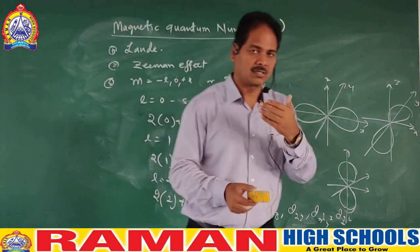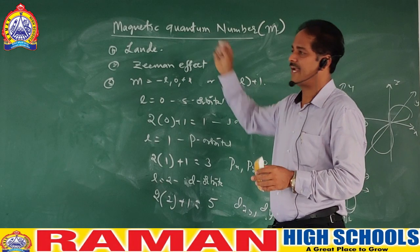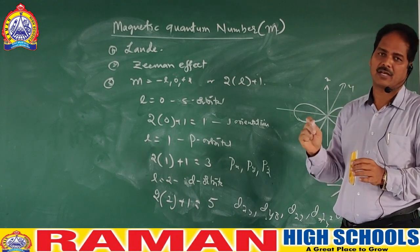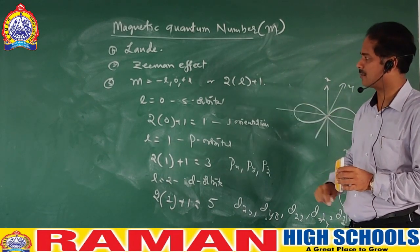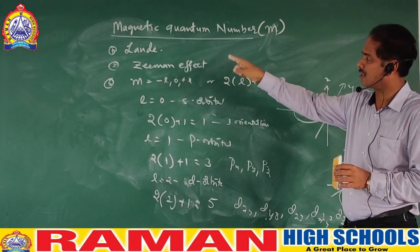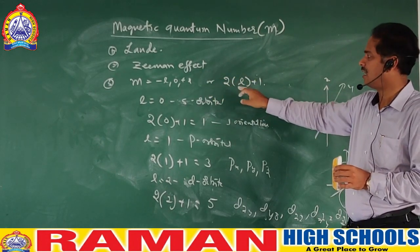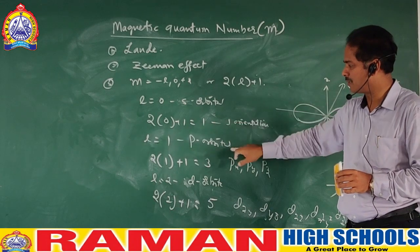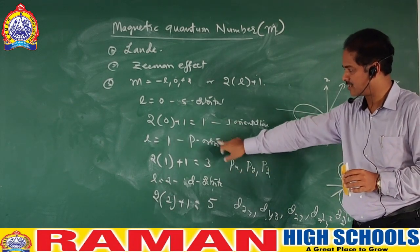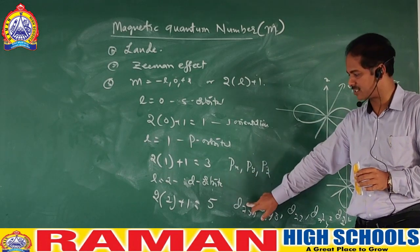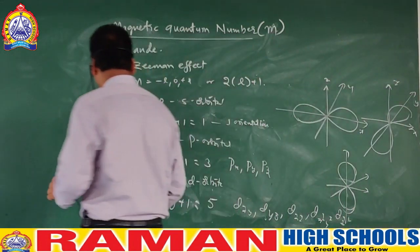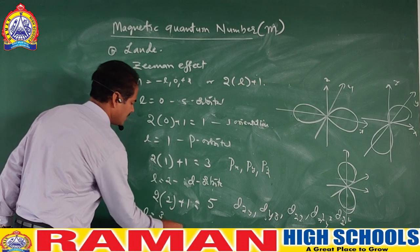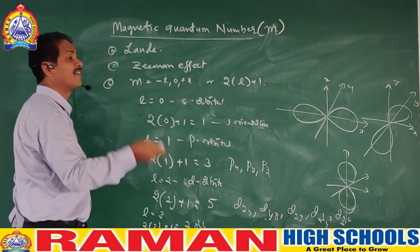Let me list it again. The magnetic quantum number was proposed by Lande; it explains the Zeeman effect. The main use is to give how many orientations a sub-shell has. M takes values minus L to 0 to plus L, or 2L + 1. L = 0 gives 1 orientation, L = 1 gives 3 orientations, L = 2 gives 5 orientations, L = 3 gives 7 orientations — meaning 7 F orbitals.